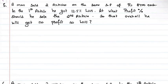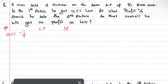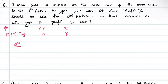Next question: A man sold two articles at the same selling price of Rs.8400 each. In the first article he got 12.5% loss. At what profit percent should he sell the second article so that overall he will get no profit no loss? For the first article, 12.5% loss means 1 by 8, so cost price is 8 and selling price is 7.